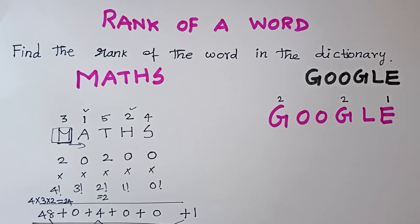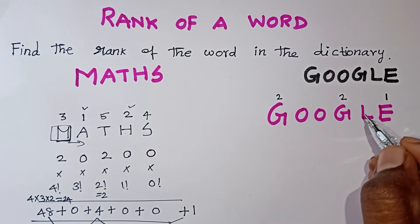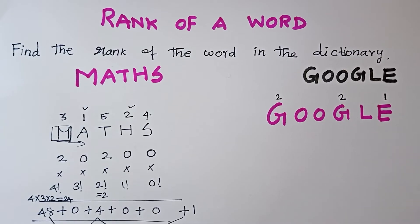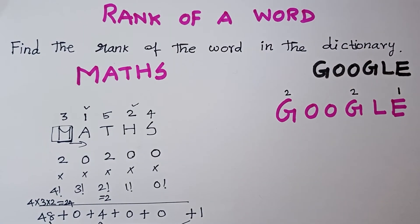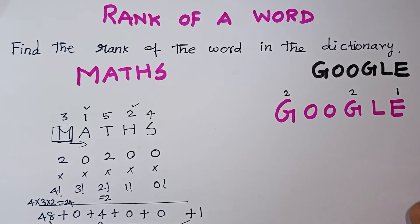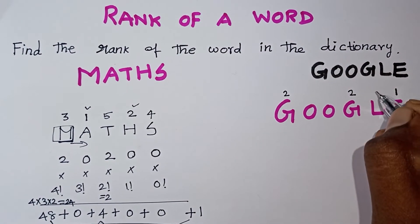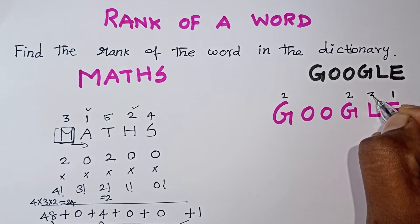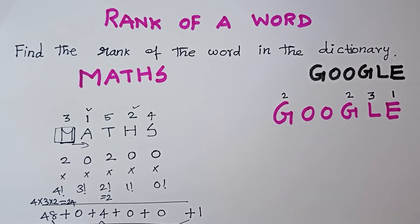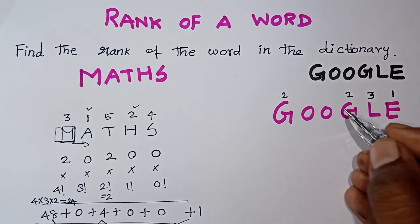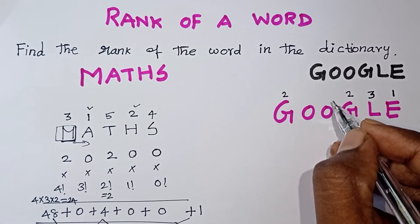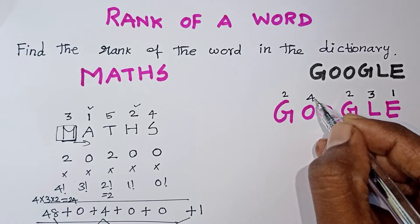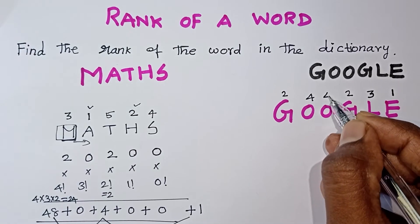Then H, I, J, K, L, M, N — so L is at position 3. Then O, P — O is at the fourth rank. So the positions of the letters in GOOGLE are identified in alphabetical order.